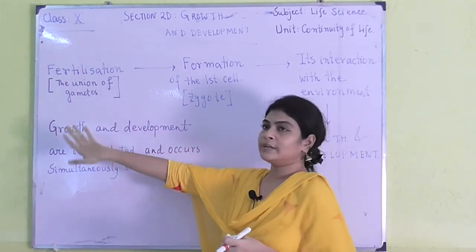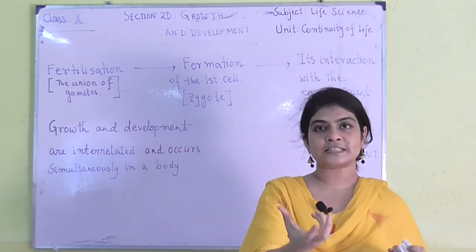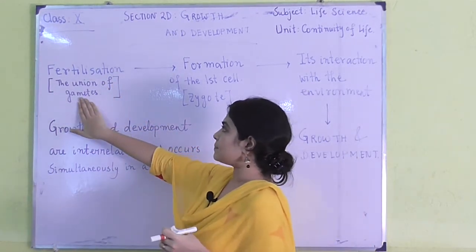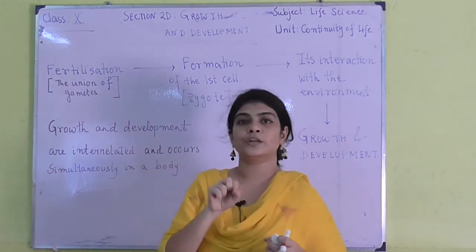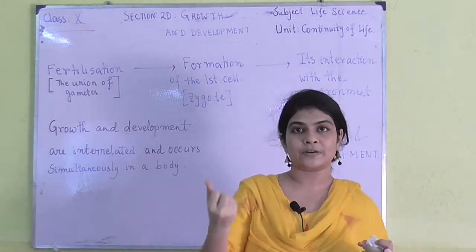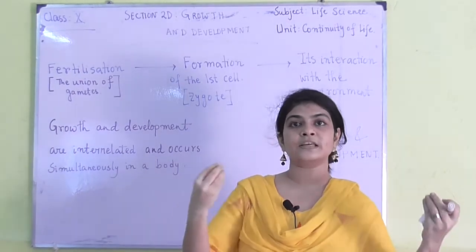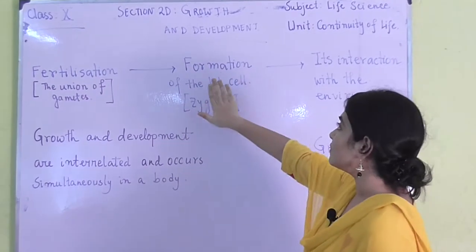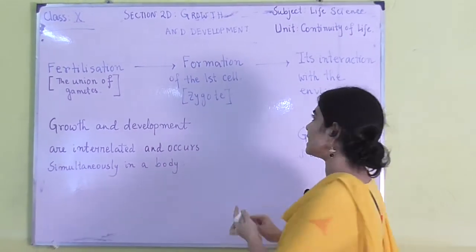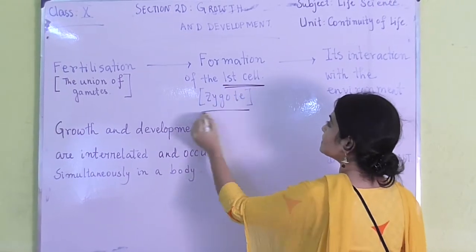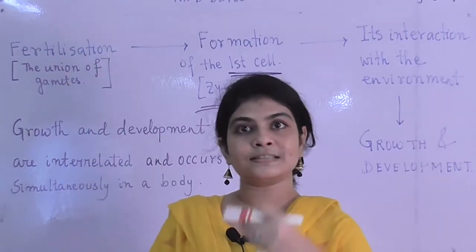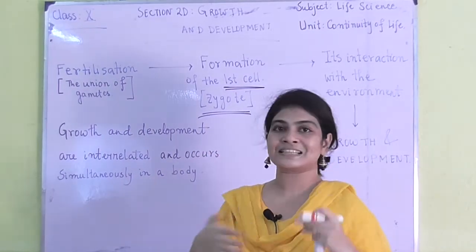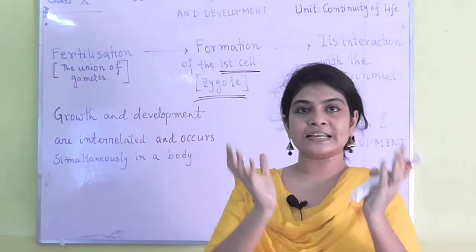The very first step is fertilization, which is basically the union of two gametes — the male gamete and the female gamete. They unite together through the process of fertilization, and as a result the very first cell is formed. This cell is known as the zygote. Once this zygote is produced, different kinds of complex processes start forming inside that cell.